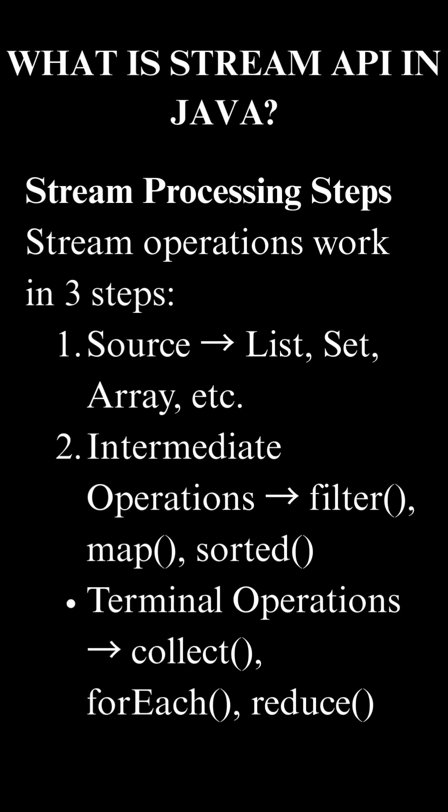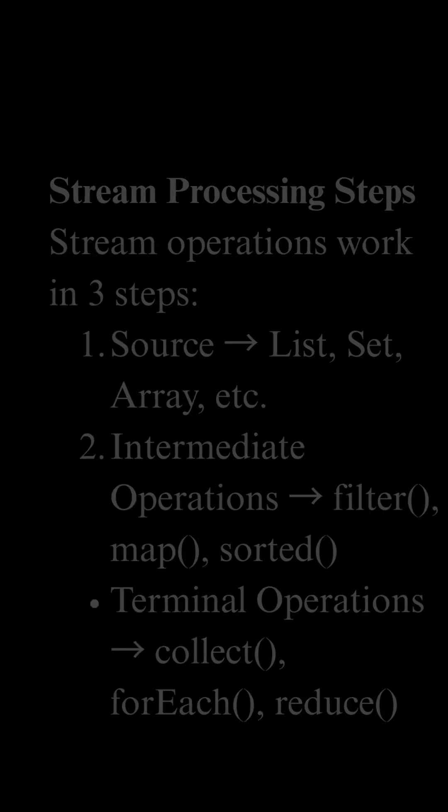Stream processing steps. Stream operations work in three steps: source, intermediate operations, and terminal operations. Source operations include list, set, array, etc. Intermediate operations are filter, map, and sorted. Terminal operations are collect, for each, and reduce.